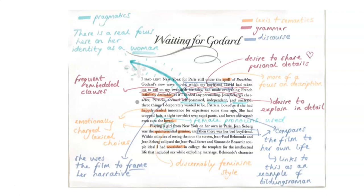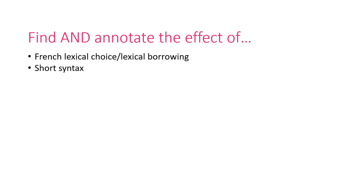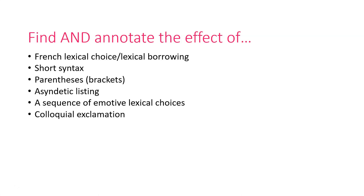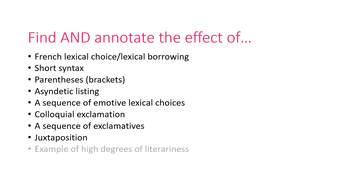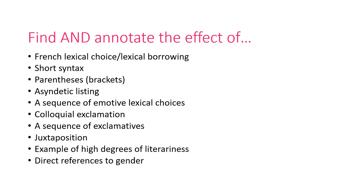Now you've made annotations of the text, here are some add-ons. I would like you to try and find examples of the following devices and annotate their effect: French lexical borrowing — think about why Nancy Miller would include that; short syntax; parenthesis (the use of brackets); asyndetic listing; a sequence of emotional lexical choices; colloquial exclamation; a sequence of exclamatives; juxtaposition; examples of high degrees of literariness; and direct references to gender. Try to find two to three examples of each, thinking most importantly about the effect. Go back to what we discussed about gendered language and seeing this text as a discernibly female narrative.